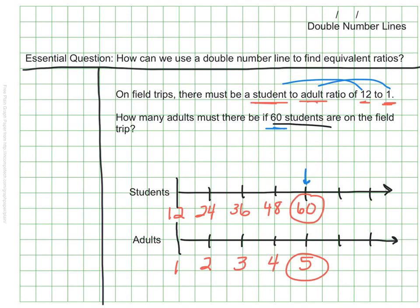And that's it. That's how we use a double number line to figure out a scaled or equivalent ratio.